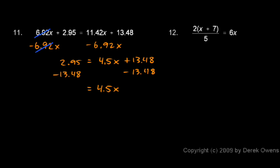And on the left I have 2.95 minus 13.48, and that gives me a negative 10.53. So I have -10.53 = 4.5x, and clearly we just need to divide each side by 4.5.